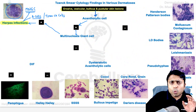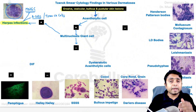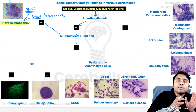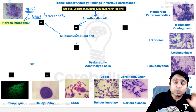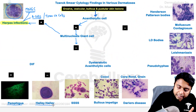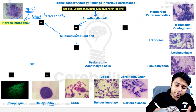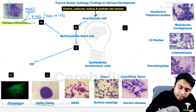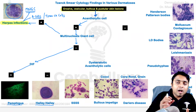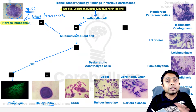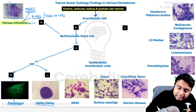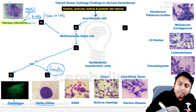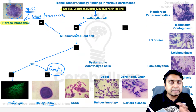If we happen to see only acantholytic cells without any multinucleated giant cells — MNGCs are absent — then the important differentials to think of are vesicobullous disorders. The important intraepidermal disorder is the pemphigus group of disorders, and we also have the genetic condition Hailey-Hailey disease. To differentiate both, do direct immunofluorescence (DIF). If under DIF we see a fishnet or chicken wire pattern, the diagnosis is pemphigus group of disorders. If the DIF finding is negative, that is because Hailey-Hailey disease is a genetic condition, so DIF will be negative and only acantholytic cells are seen.